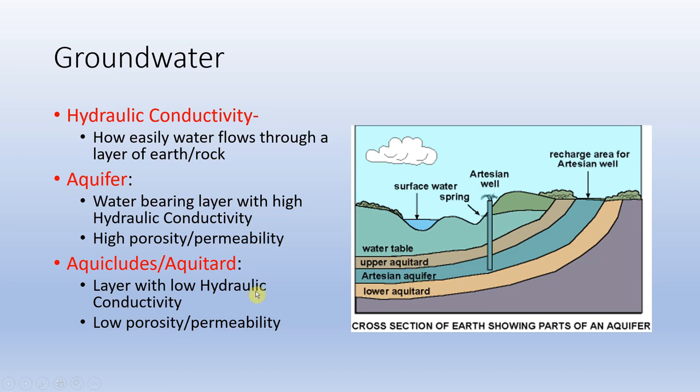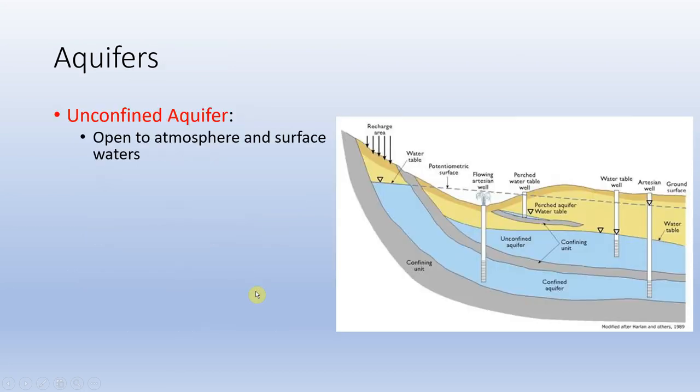Then we have a couple different types of aquifers as well. First, we have unconfined aquifers. This is any aquifer that is open to the atmosphere and surface conditions. So this area over here, this yellow area right here, this would be an unconfined aquifer. Or, I'm sorry, this blue area down here, so it would be an unconfined aquifer. So any water that falls or precipitates onto this surface area overlying this aquifer has the chance to make it down into the unconfined aquifer.